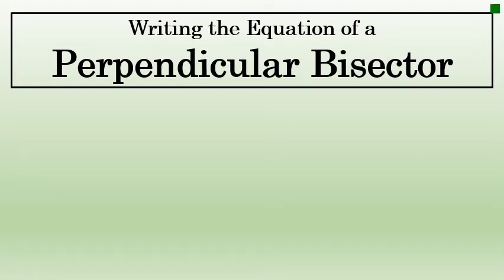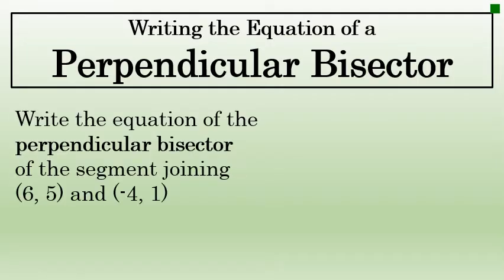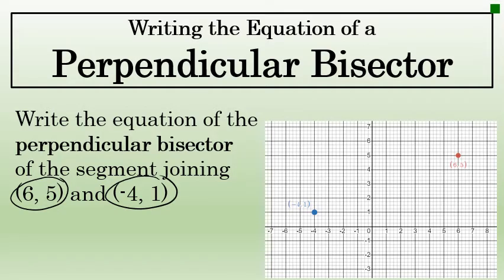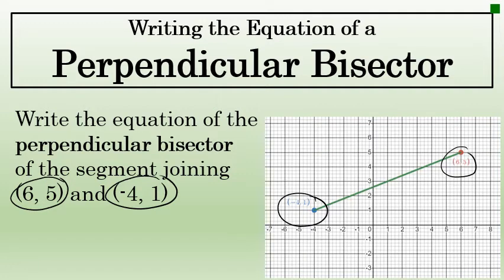I'm going to describe how to write the equation of a perpendicular bisector to a line segment in three steps. I'll then perform those three steps on this example problem. I'll write the equation of the perpendicular bisector of the segment joining these two points, 6, 5 and negative 4, 1. If we take a look at those two points on a coordinate plane, we can see negative 4, 1 in the second quadrant and 6, 5 in the first quadrant, and we will write the equation of the perpendicular bisector of the segment joining those two points.